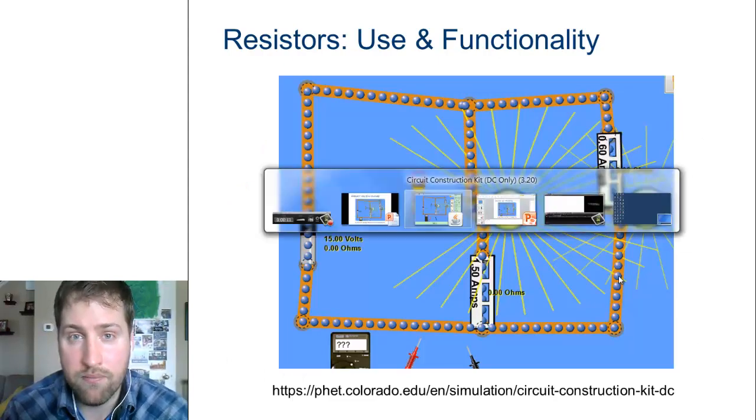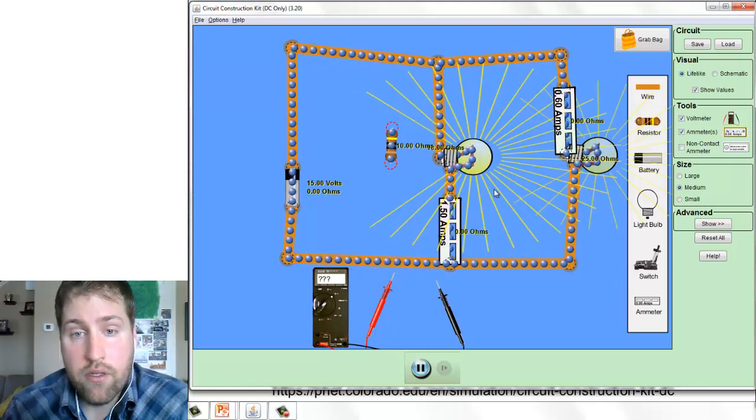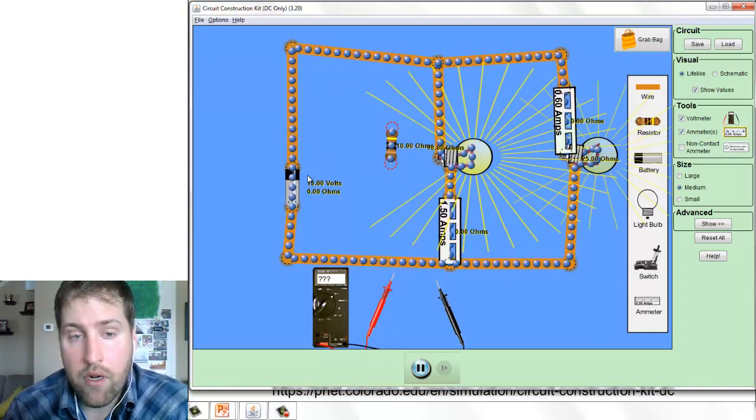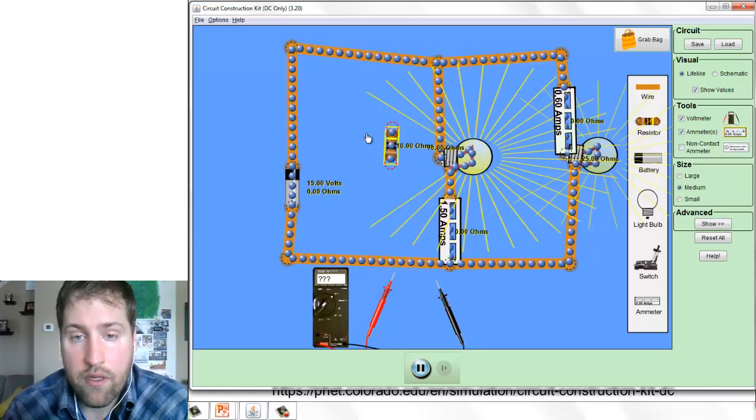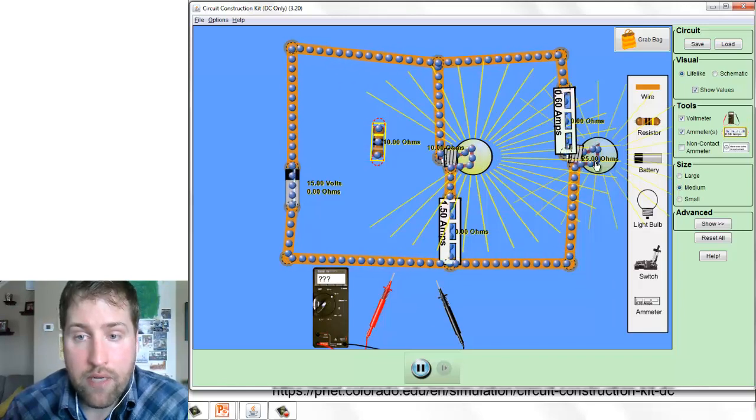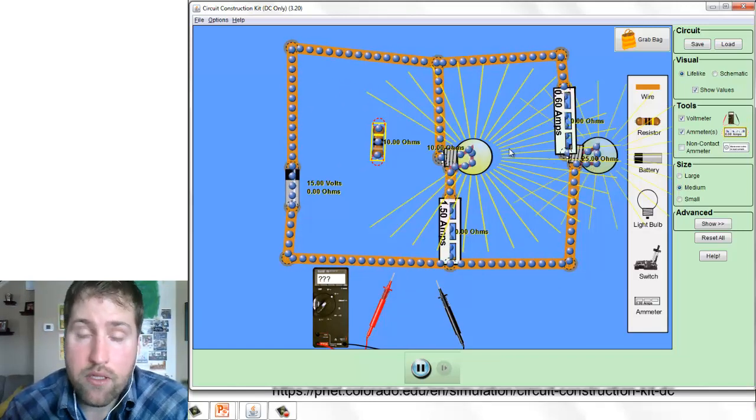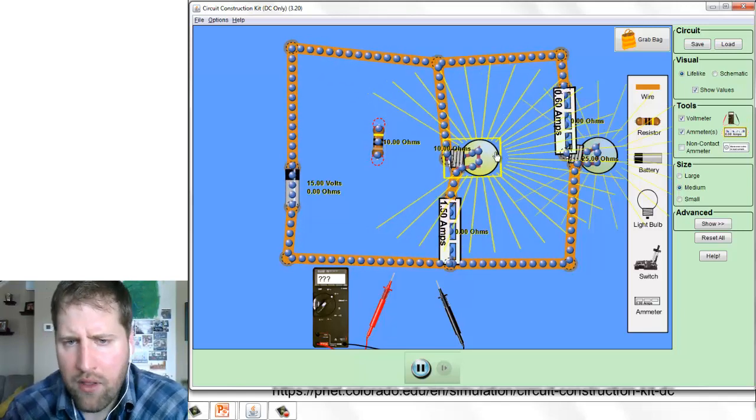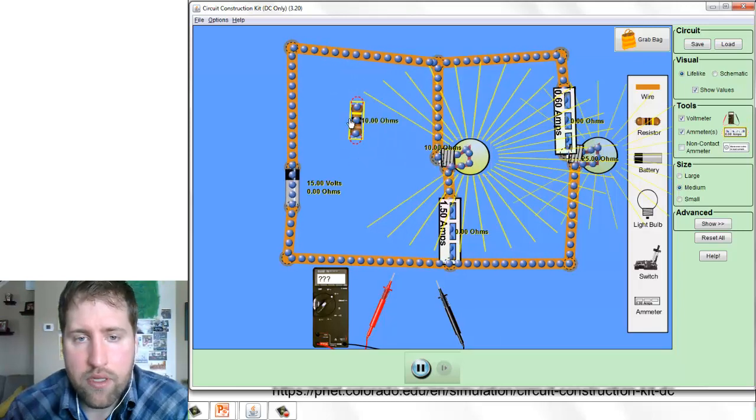Before we go forward, let me show you an example of what I mean using our simulation. So here you can see we have our simulation running. I'm running over on the left side here 15 volts. In the middle I have a light bulb that's using 10 ohms of resistance, and on the right I have a light bulb that has 25 ohms of resistance.